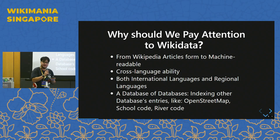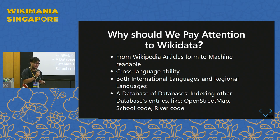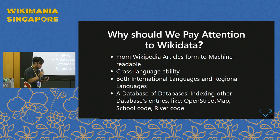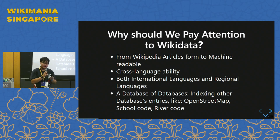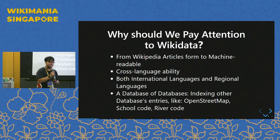Wikidata also has some cross-language abilities — it stores information in a language-neutral form, and then uses labels to note what something is called in English, in Chinese, and so on, covering both international and regional languages. A simple way to describe Wikidata: I would say it is a database of databases. It indexes other third-party entries — for example, in Taiwan, we have the school code and the river code maintained by the Taiwanese government.